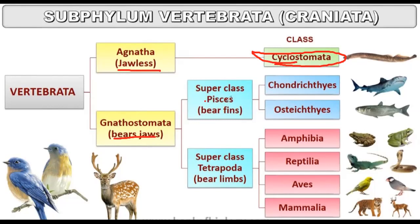Fishes — Pisces — are of two types. The cartilaginous fishes have no bone; the whole body skeleton is made of cartilage — these are Chondrichthyes. Bony fishes are Osteichthyes. The super-class Tetrapoda has four classes: Amphibians, Reptiles, Aves, and Mammals.